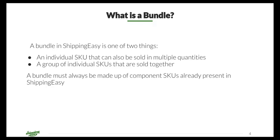In its simplest form, ShippingEasy sees bundles as items that can be sold individually as well as collectively. This means that so long as you have products listed individually within ShippingEasy with their own SKU numbers, ShippingEasy will be able to support you listing them grouped together as well. Note that this would not include pre-packaged groupings of products. Some basic examples include products like shirts in different colors that you'd also want to sell grouped together, such as the same shirt in multiple colors.